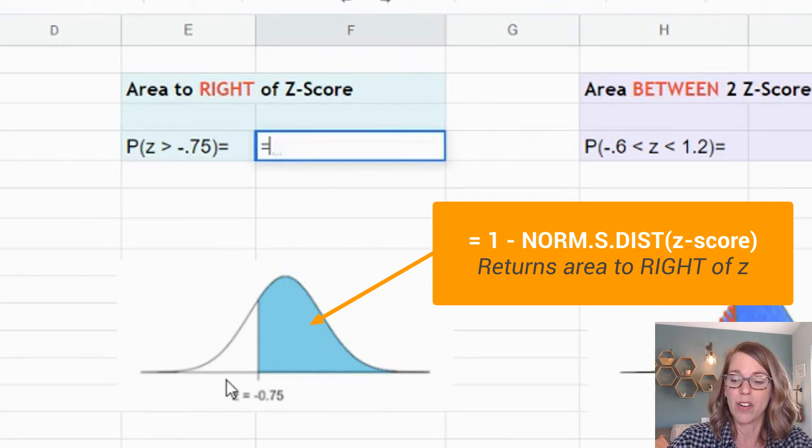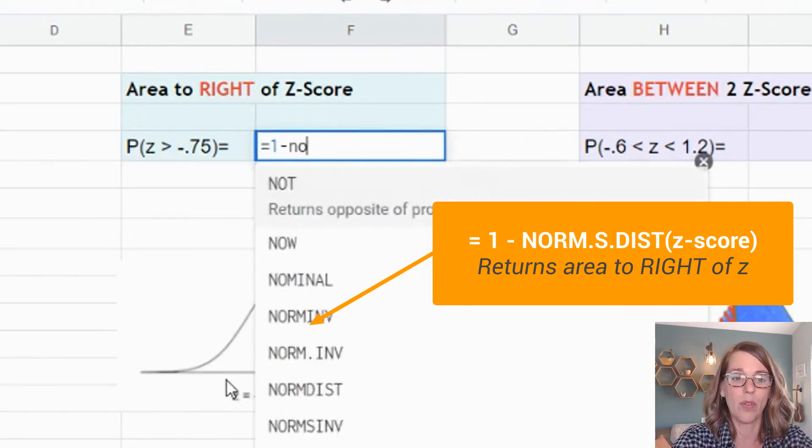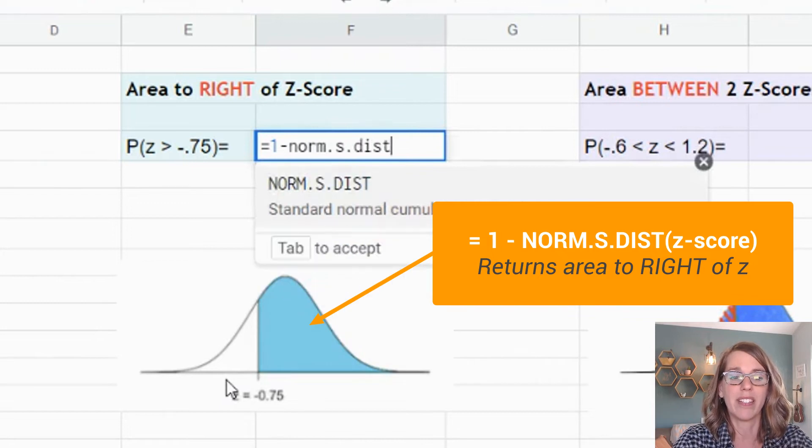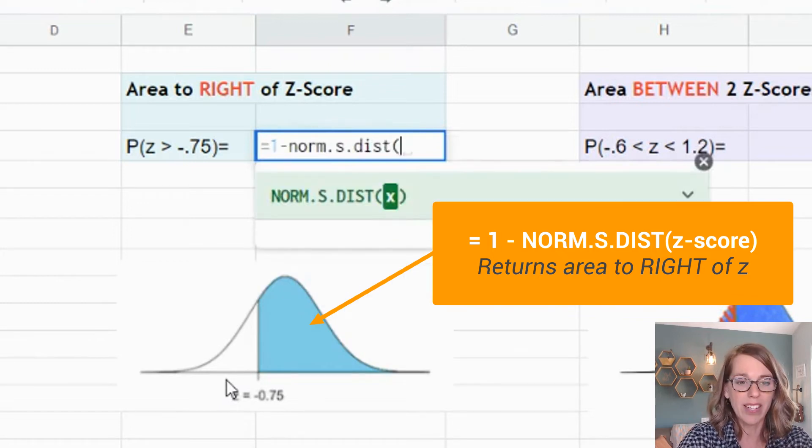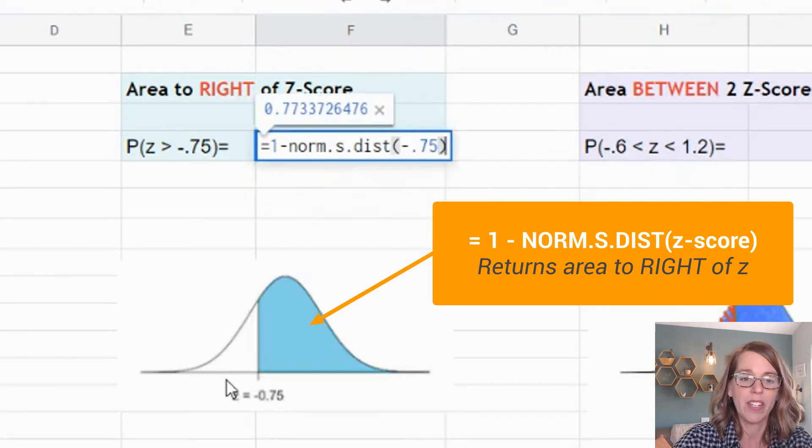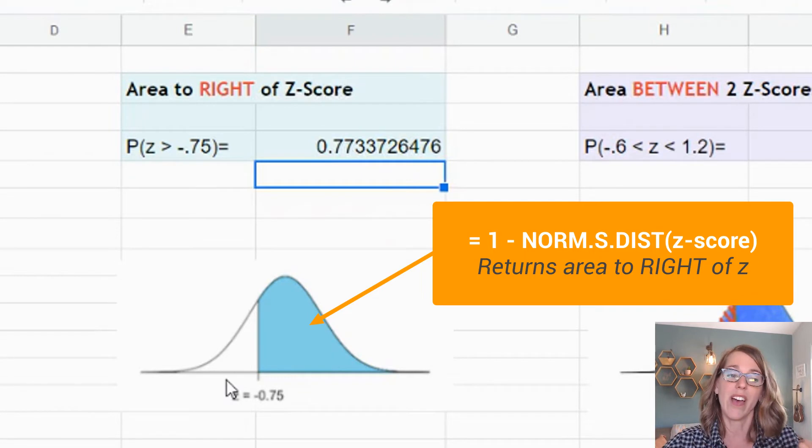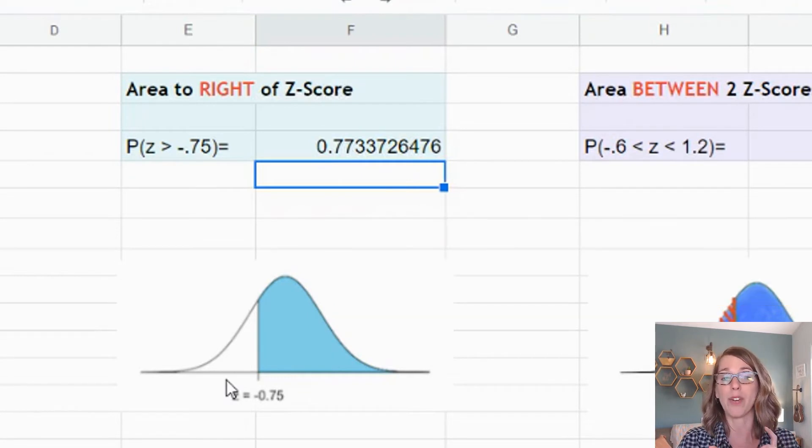The entire area under that curve equals 1. I'm going to subtract the area that I don't want. So NORM.S.DIST, and it's that area in white to the left of negative 0.75. Now, I should get the same area that I got in the other one because of symmetry. It doesn't matter which direction my curve is turned, and sure enough, I get that same area.